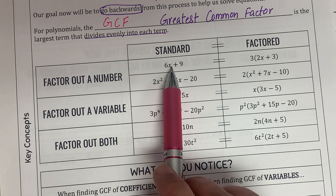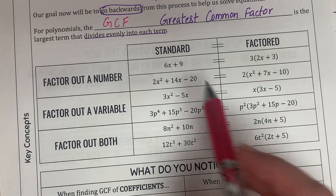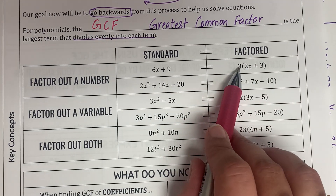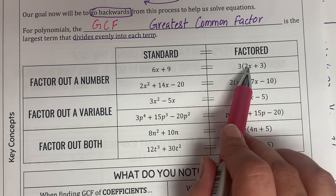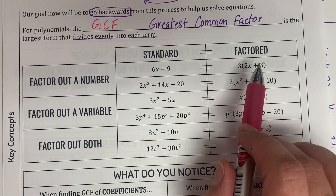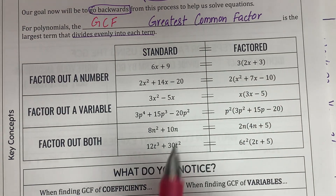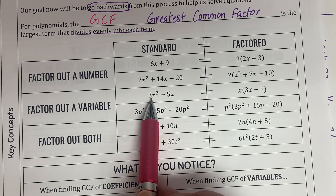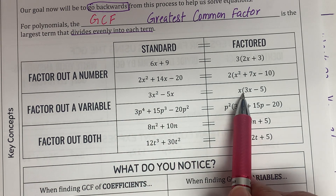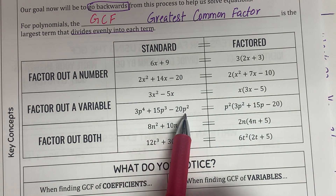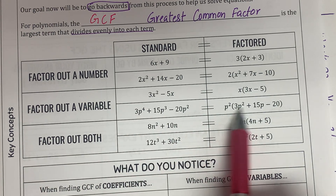For the first example, 6x plus 9: this is standard form and the factored form is 3(2x + 3), where 3 was the common factor between the two terms. I took it out, divided both terms by it, and what's left goes inside the parentheses. Here we also see a quadratic equation in factored form, a binomial with two terms, and a trinomial with highest degree of 4 — each shown alongside its factored form.